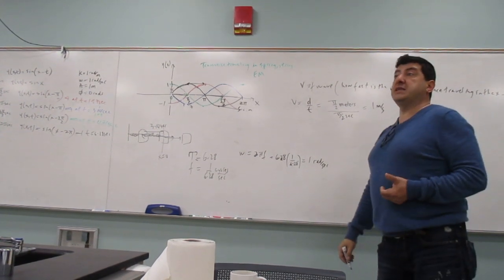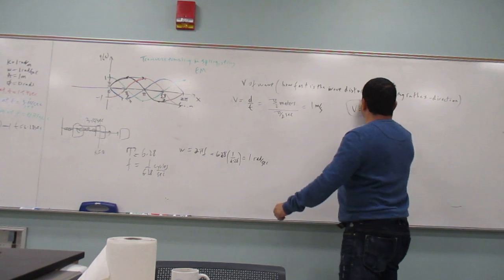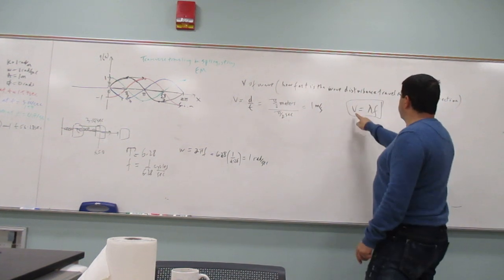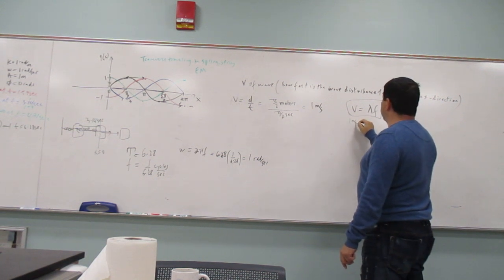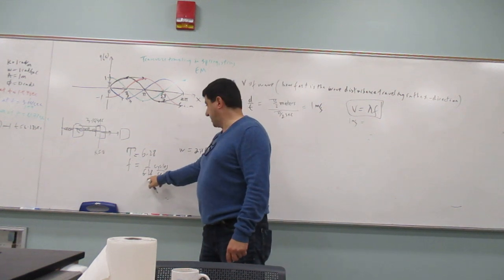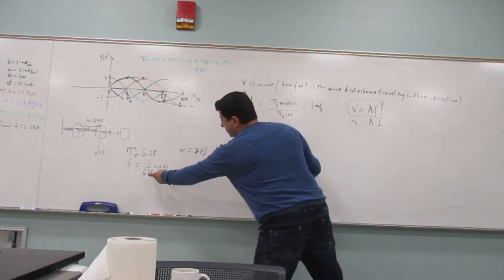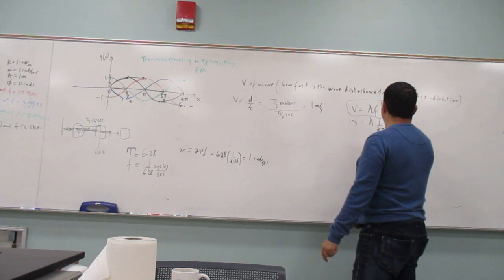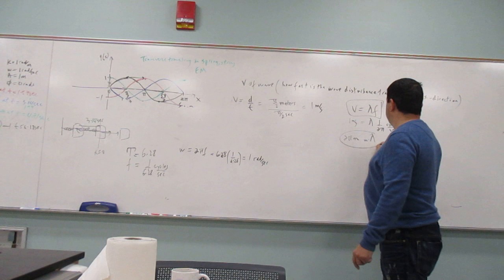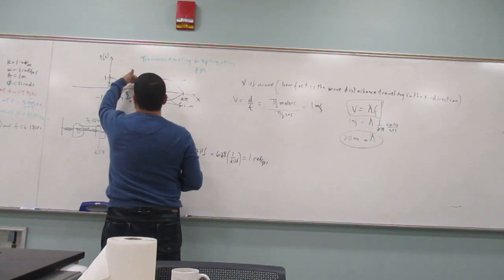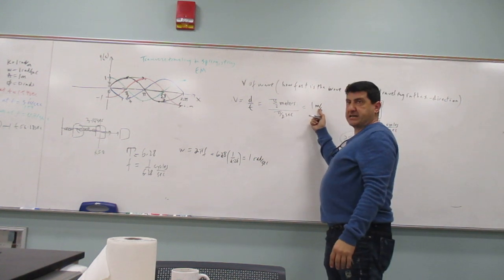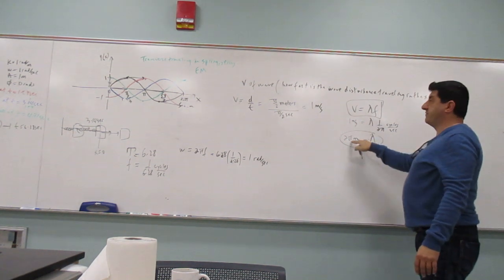We can also calculate the wavelength. The velocity of any wave equals wavelength times frequency. With velocity = 1 m/s and frequency = 1 over 6.28 = 1 over 2 pi Hz, the wavelength is 2 pi meters. That matches our picture — everything is consistent. The velocity of the wave is 1 meter per second.